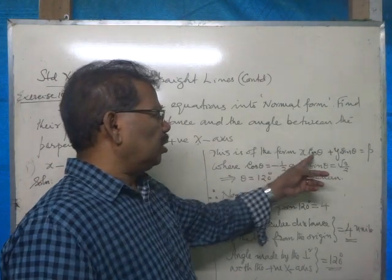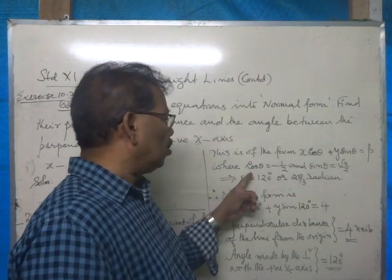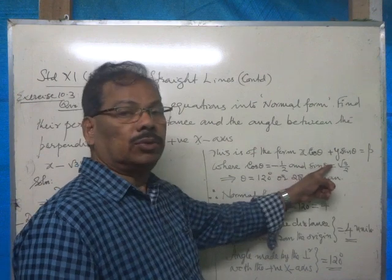This is the normal form: x cos theta plus y sin theta equals p, where cos theta equals negative half and sin theta equals root 3 by 2.